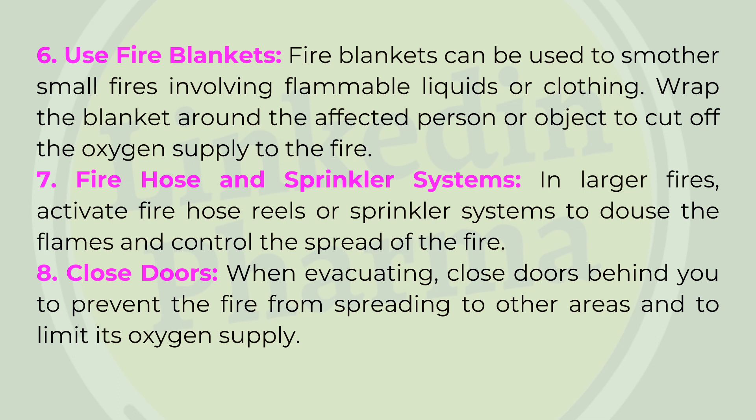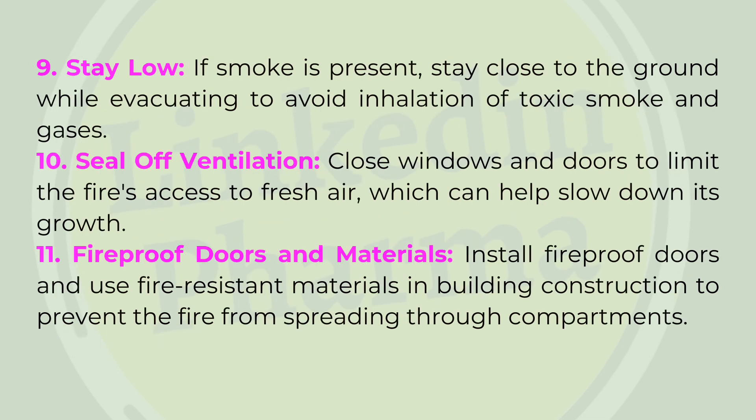6. Use fire blankets — fire blankets can be used to smother small fires involving flammable liquids or clothing. Wrap the blanket around the affected person or object to cut off the oxygen supply to the fire. 7. Fire hose and sprinkler systems — in larger fires, activate fire hose reels or sprinkler systems to douse the flames and control the spread of the fire. 8. Close doors — when evacuating, close doors behind you to prevent the fire from spreading and to limit its oxygen supply. 9. Stay low — if smoke is present, stay close to the ground while evacuating to avoid inhalation of toxic smoke and gases. 10. Seal off ventilation — close windows and doors to limit the fire's access to fresh air, which can help slow down its growth.